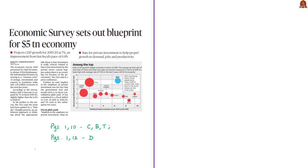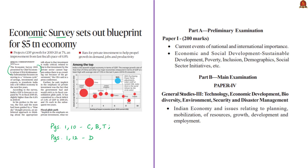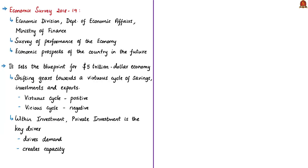The first news article is about the Economic Survey, which was presented by the Chief Economic Advisor. This will be relevant in prelims under current events of national importance, economic development, and in mains under GS Paper 3 on Indian economy and issues relating to planning, mobilization of resources, growth, development and employment. The Economic Survey for 2018-19 was released by the Economic Division under the Department of Economic Affairs under the Ministry of Finance. It is a survey of the performance of the Indian economy from 1st April 2018 to 31st March 2019.